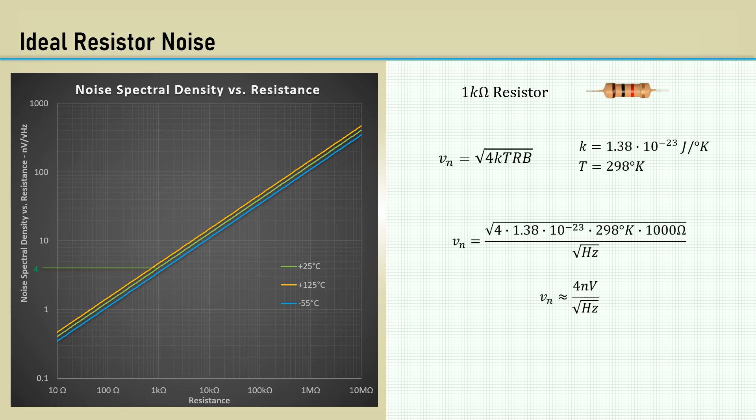We can use that value as a rule of thumb. We can multiply the 4 nanovolts by the square root of the ratio of the resistance of any resistor in kilo-ohms.